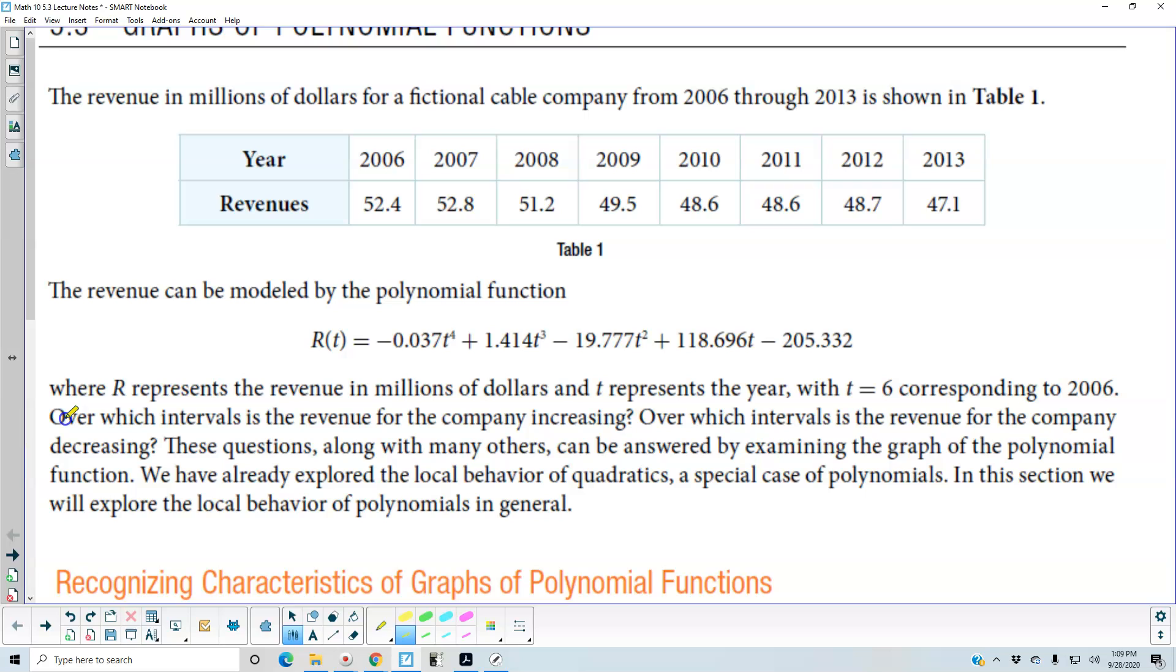Now let's go back to this paragraph here and take a look at over which intervals is the revenue for the company increasing. So we can see it's increasing from here to here. We can see that it is increasing from 48.6 to 48.7.